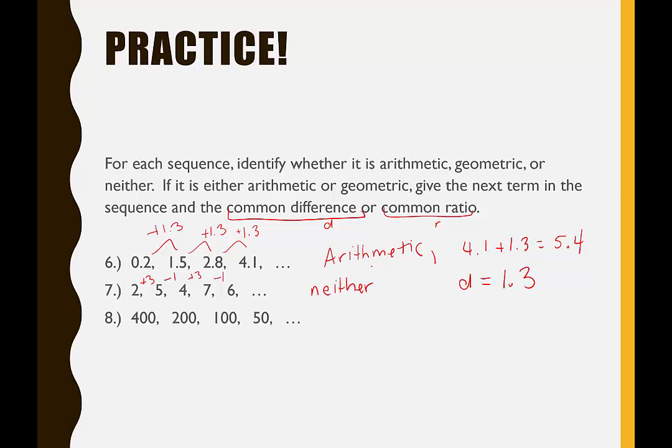Question eight: I have 400, 200, 100, 50. Checking to see if it's arithmetic, first I would subtract 200, subtract 100, subtract 50. That's no good. That's different amounts.